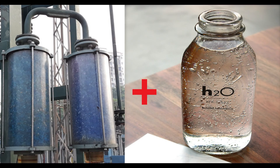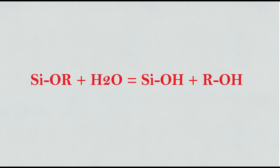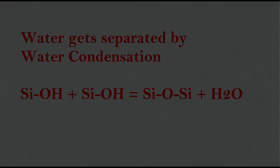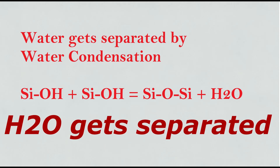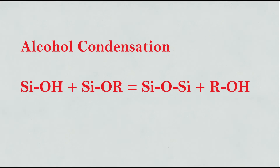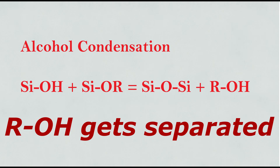Let's look at the chemical reaction of silica gel with water, so that we can understand how silica gel absorbs water. Silica gel chemical formula is SiO-R, where Si is silica and R is an alkyl group such as methyl. When silica gel comes in contact with water, the chemical reaction is: SiO-R + H₂O → SiO-H + ROH. Then water gets separated by water condensation: SiO-H + SiO-H → SiO-Si + H₂O. Then alcohol condensation occurs: SiO-H + SiO-R → SiO-Si + ROH. This is how silica gel absorbs water.